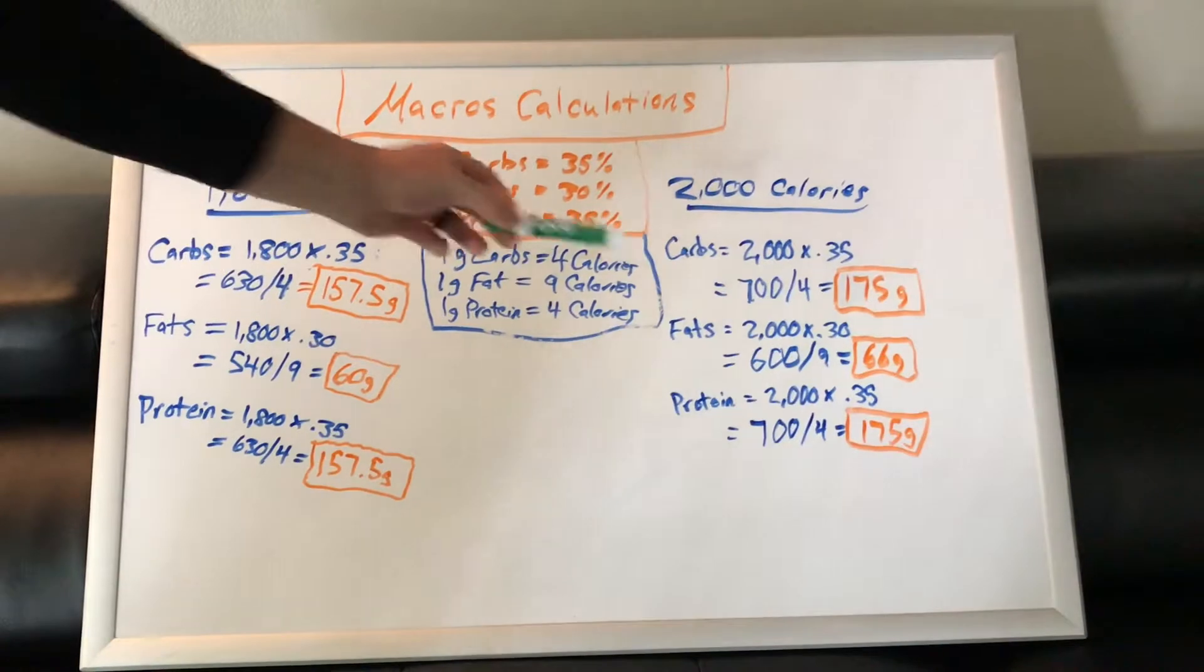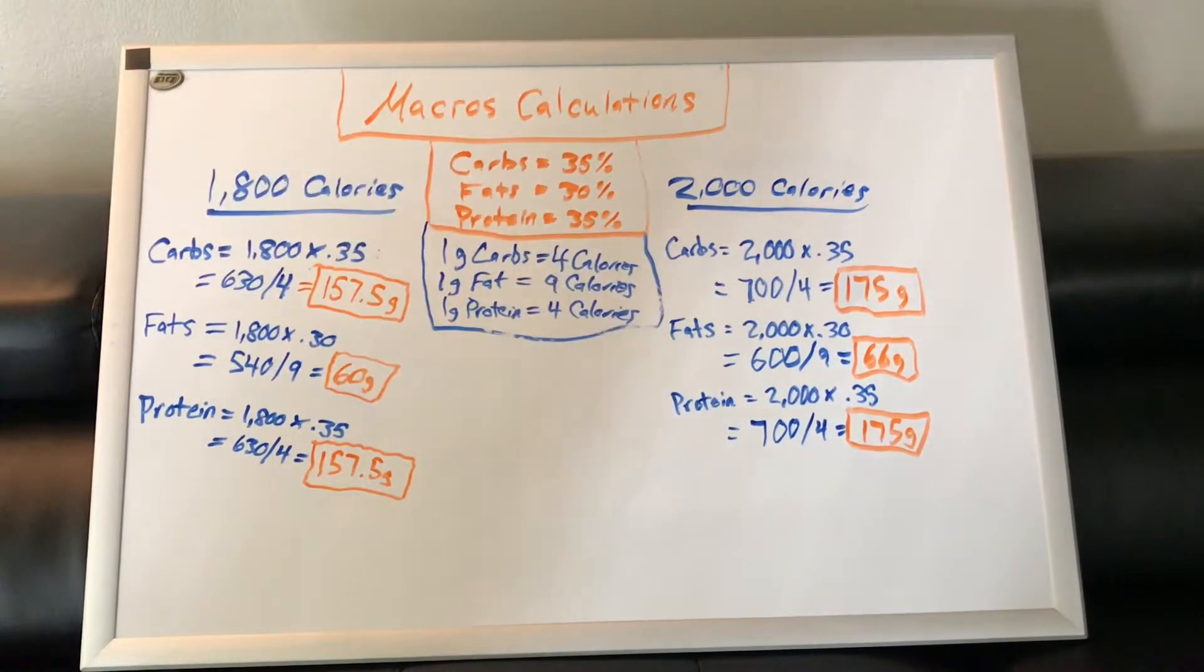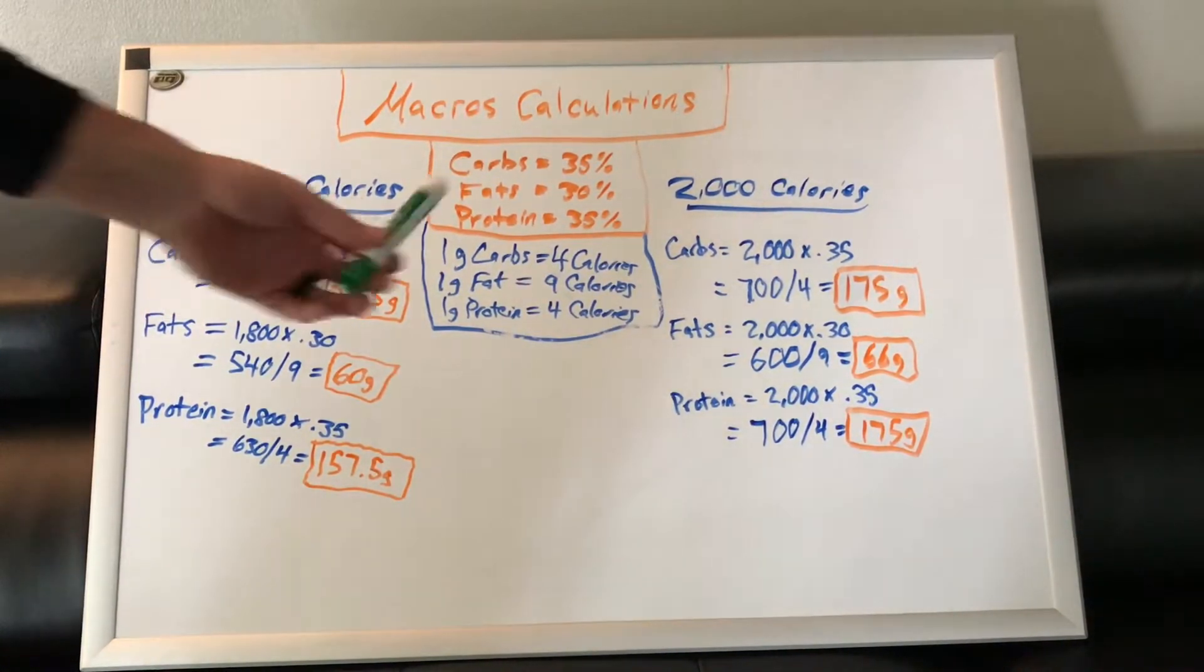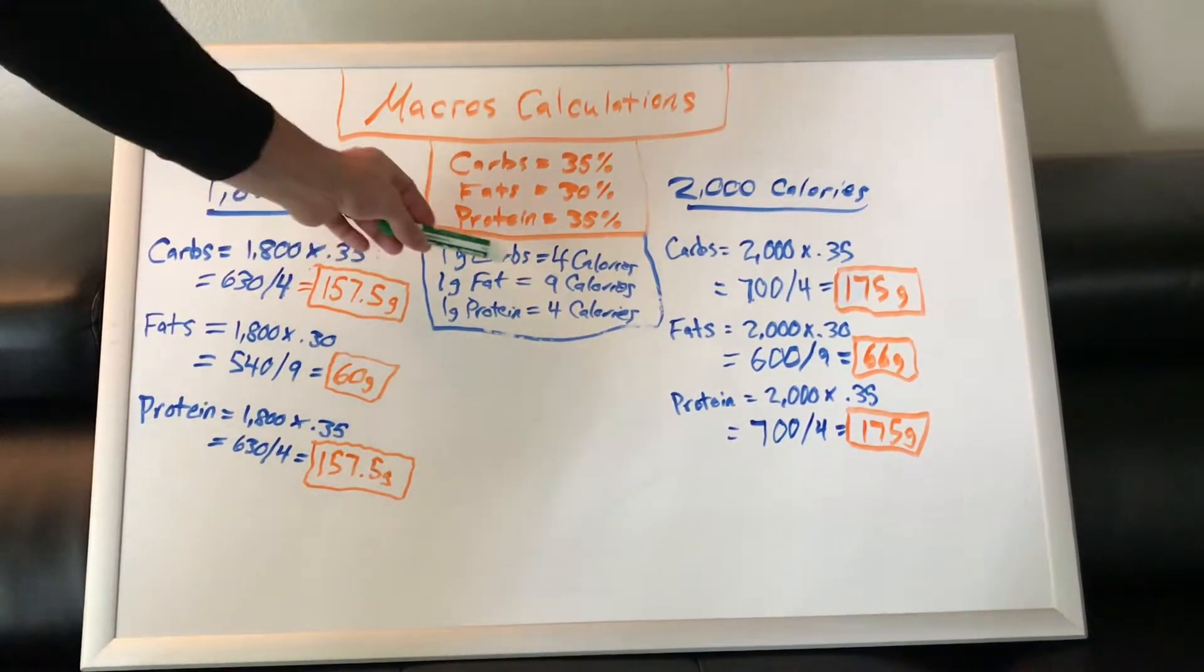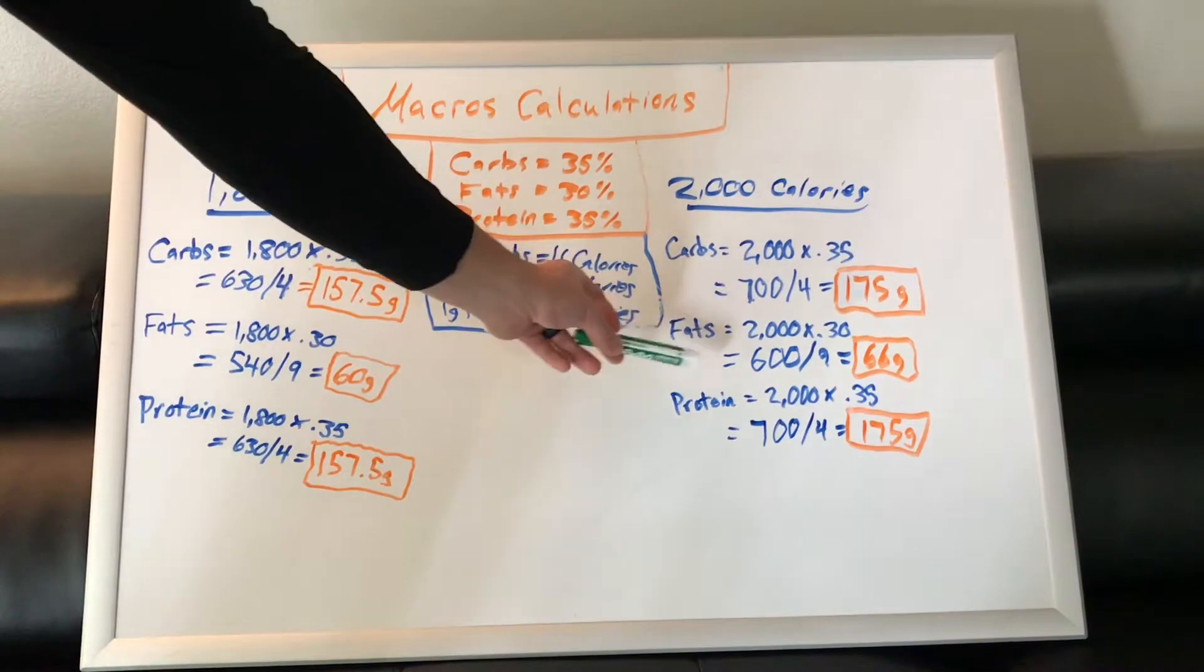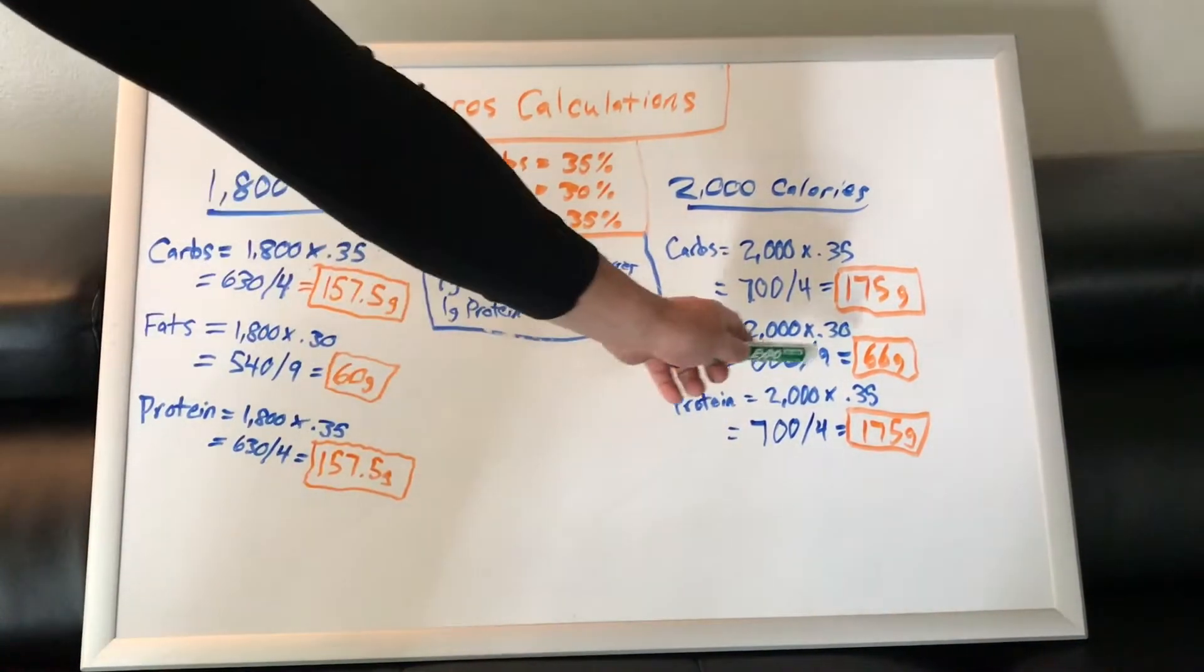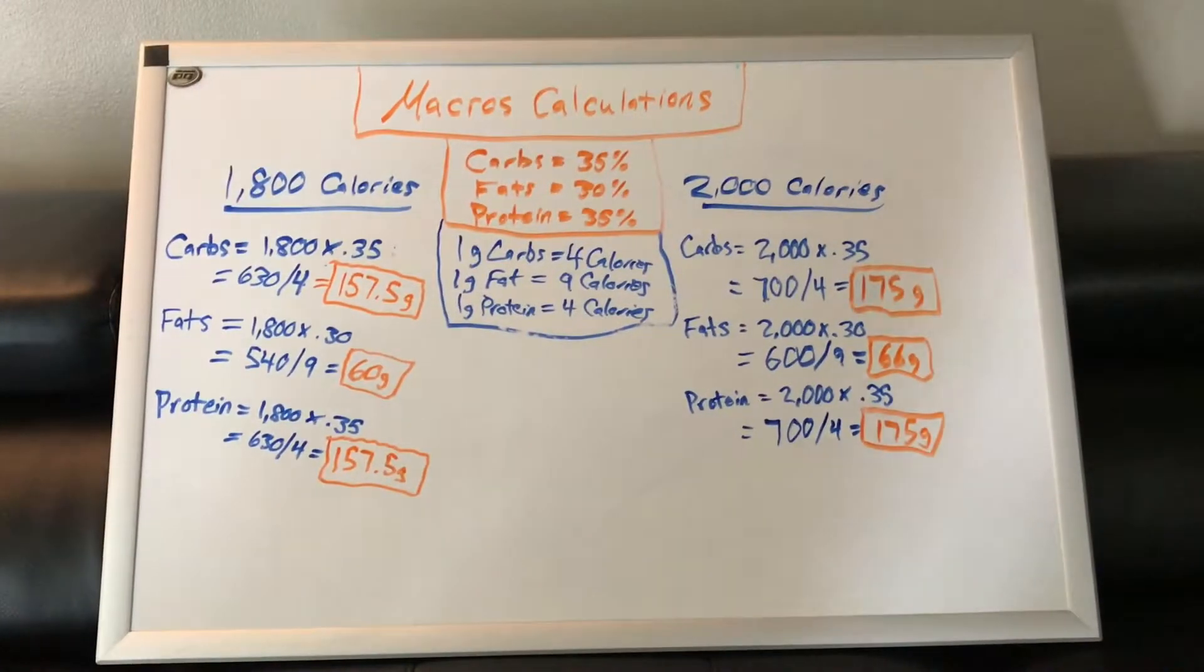And then for fats, 2,000 times 0.30, which is 30%. That's going to come out to 600 calories. And since 1 gram of fat equals 9 calories, we're going to go 600 divided by 9, which equals 66 grams of fat per day.